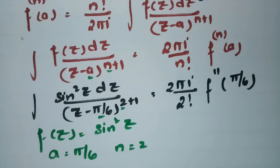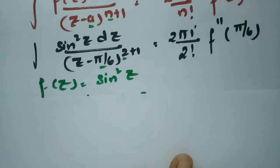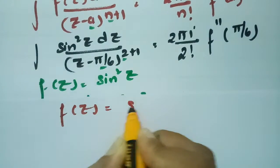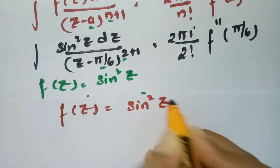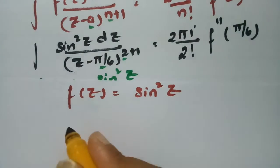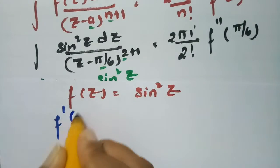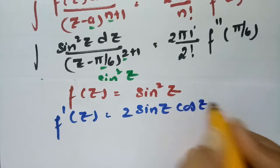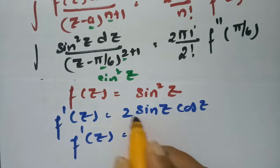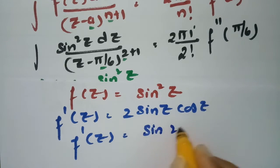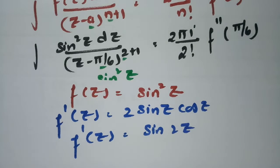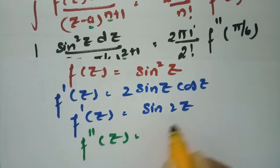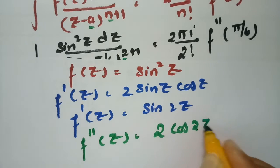Now I compute the derivatives of f(z) = sin²z. The first derivative is 2 sin z · cos z = sin 2z, using the double angle identity. The second derivative is then 2 cos 2z.